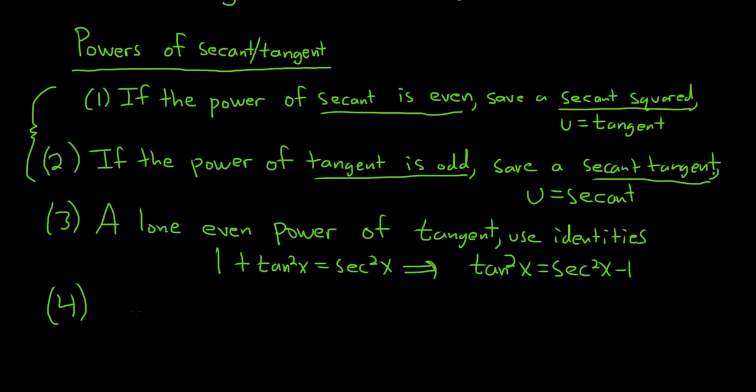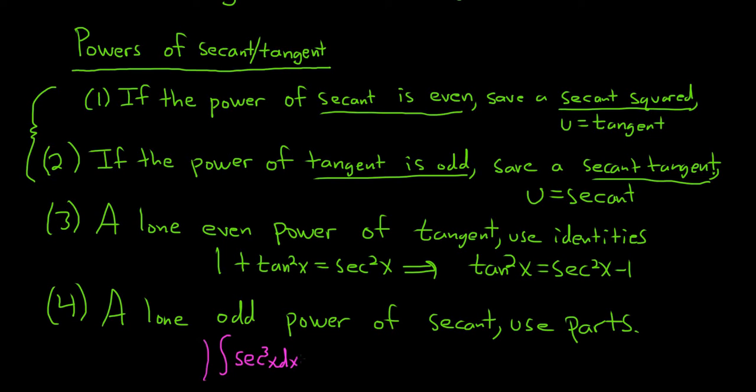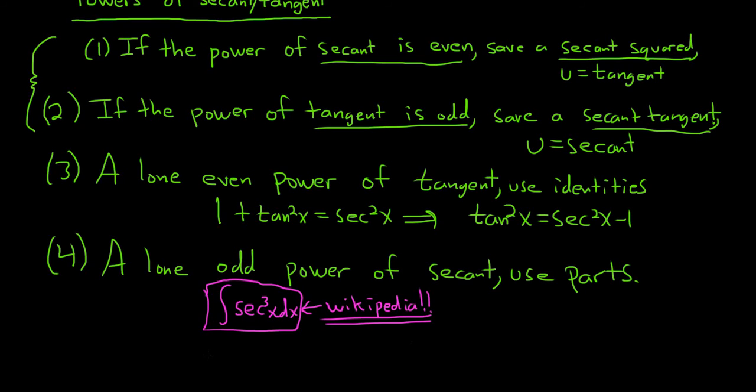The fourth case is a really famous case. A lone odd power of secant. In this case, you use parts. The classic example here is the integral of secant cubed. I first saw this in a differential equations class. This is so famous that it's on Wikipedia. This integral has its own Wikipedia entry. You use parts twice. It's a special type of integral where you get the same thing and just do a trick.